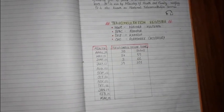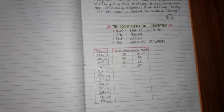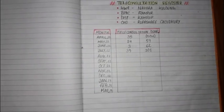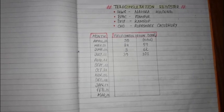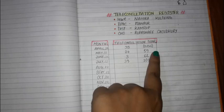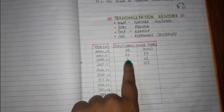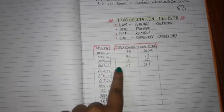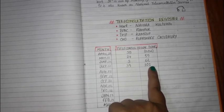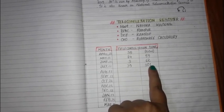Here is my register, and I have made a front page with a table which consists of month, number of teleconsultations done, and the total. For the month of April I have done 35 teleconsultations, in May I have done 24 — total 59. In June I have done 3 — total 62. In July I have done 39, and the grand total is 101. So till July I have done a total of 101 teleconsultations.